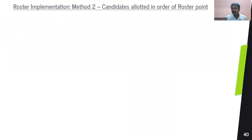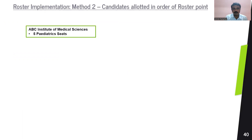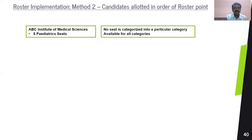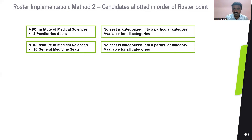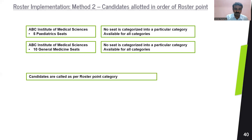Let's look at how the entire admission happens with an example. Consider ABC Institute of Medical Sciences, which has pediatric seats and general medicine seats. In this method, there is no seat categorization, so the seat matrix will not carry any distinction of whether a seat belongs to OBC, SC, ST, EWS, etc. The seat matrix will simply say: ABC Institute of Medical Sciences — five pediatric seats in total, and ten general medicine seats in total. That is the first key point about this method, used in INISET for JIPMER and possibly for AIIMS.